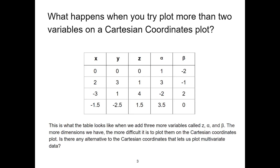What happens when you try to plot more than two variables on a Cartesian coordinates plot? This is what the table looks like when we add three more variables called z, alpha, and beta. The more dimensions we have, the more difficult it is to plot them on the Cartesian coordinates plot.